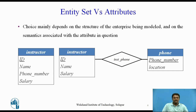Treating a phone as an attribute phone number implies that instructors have precisely one phone number each. Treating phone as an entity permits instructors to have several phone numbers, including zero, associated with them. However, we could instead define phone number as a multi-valued attribute to allow multiple phones per instructor. The main difference is that treating a phone as an entity better models a situation where one may want to keep extra information about a phone, such as its location or its type. Thus, treating phone as an entity is more general than treating it as an attribute and is appropriate when the generality may be useful.